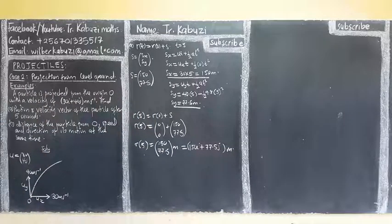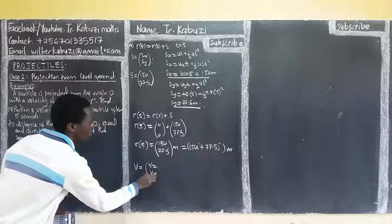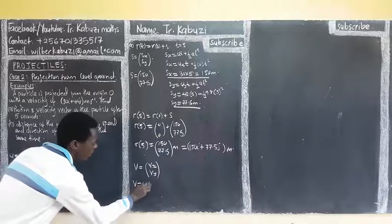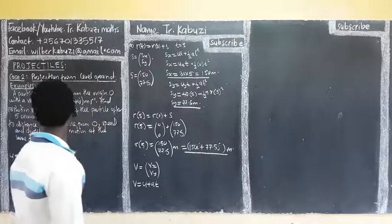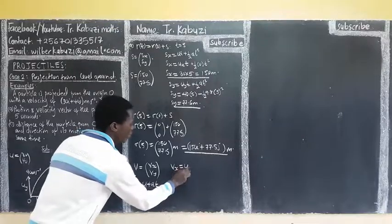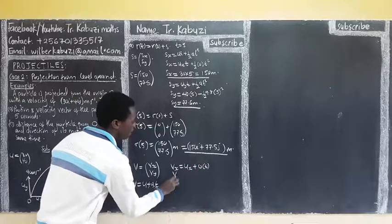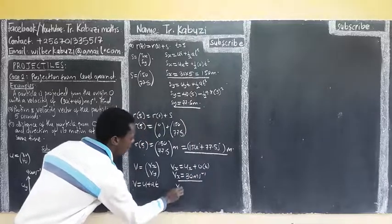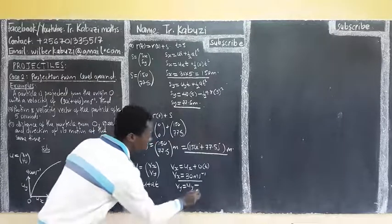After that, they want us to get the velocity vector. Remember our velocity vector v is given by vx and vy. So how we get our vx — remember vx using v = u + at. So my vx is going to be ux. Now this time I'm going to start in the horizontal component; acceleration is going to be 0, so plus 0 times t. So my vx is going to be ux which is 30 meters per second.